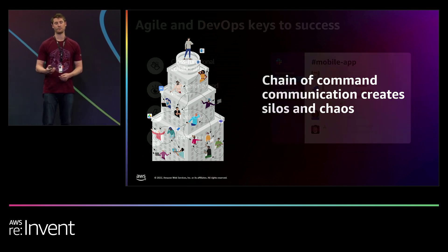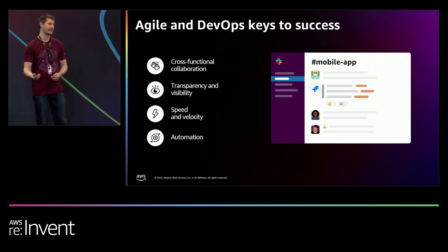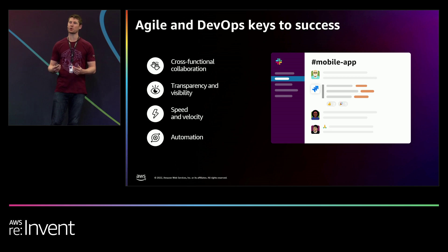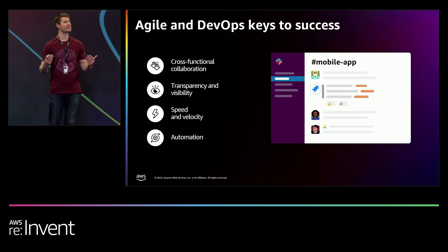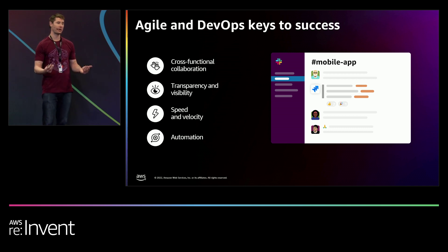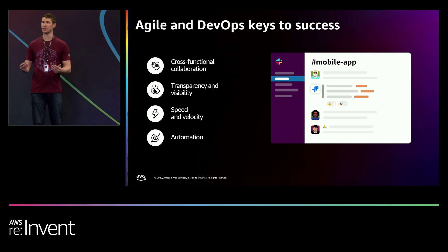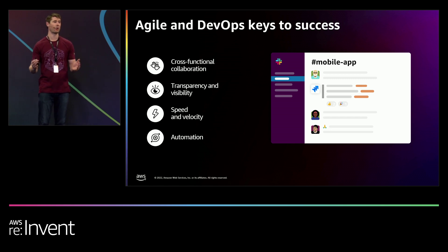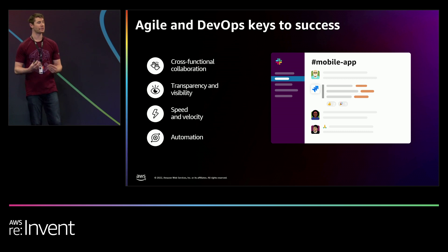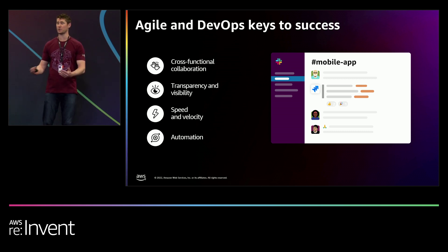What we really need is a way to centralize all this collaboration and bring transparency to it all. When we talk about how Slack fits in this picture, there's a really easy analogy: you can think of Google as the window into all the knowledge and information across the world, where Slack is that same window but to all the knowledge and all the work across your entire organization and teams — a single pane of glass.